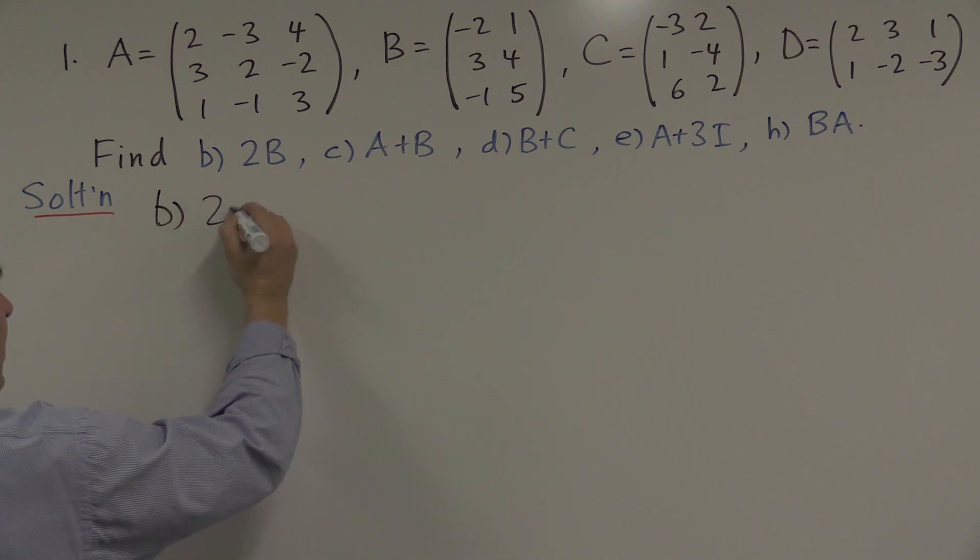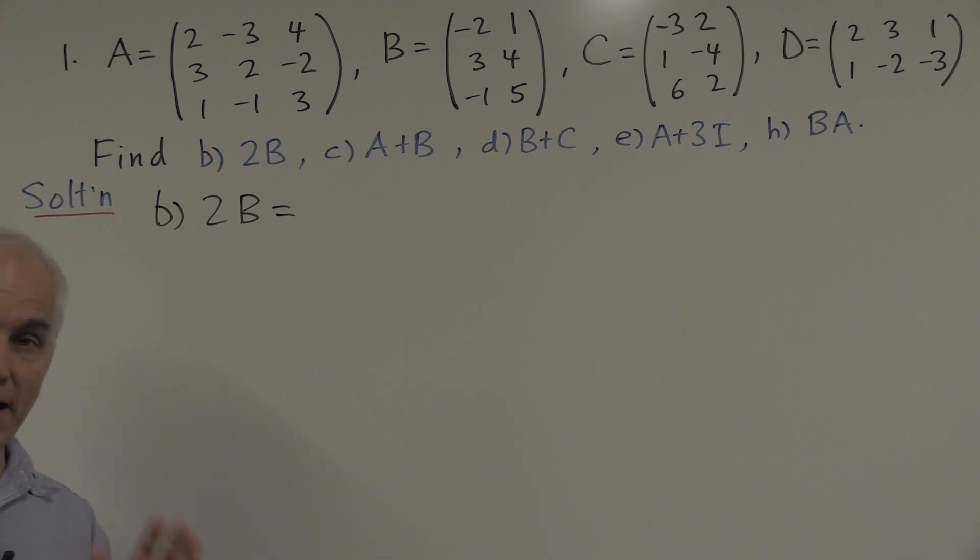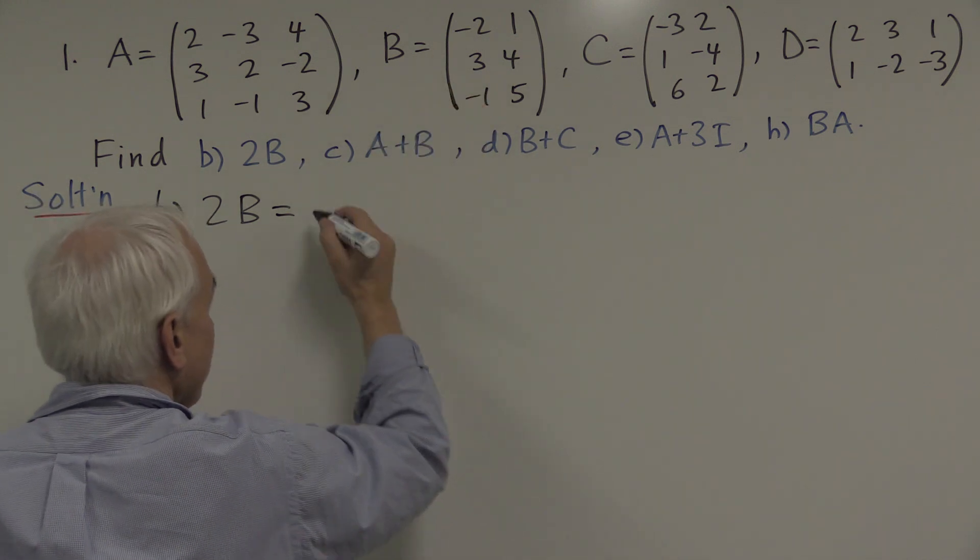Question B. Calculating the matrix 2 times B. Well when you multiply a matrix by a number it means that you have to multiply all of the entries by that number. So we're just going to multiply all of the entries by 2.